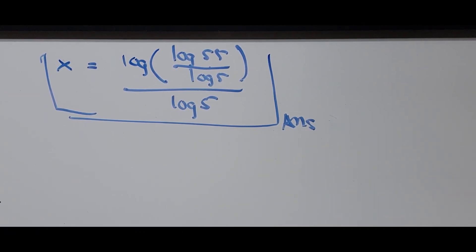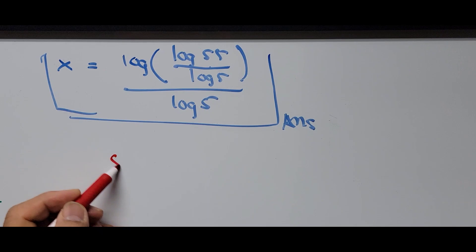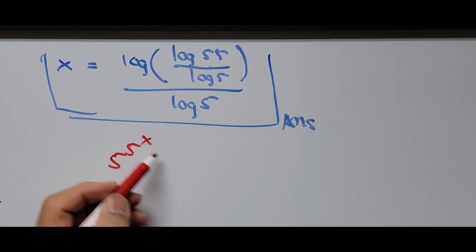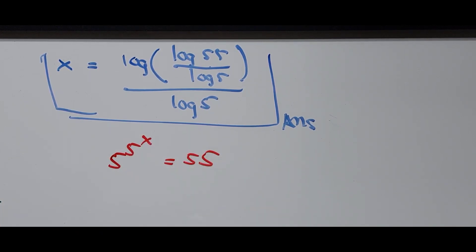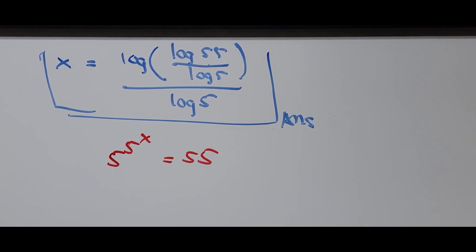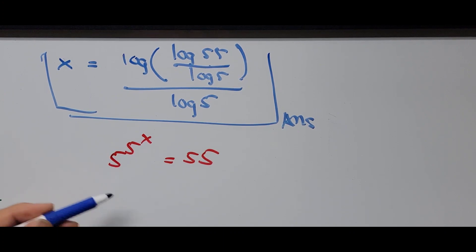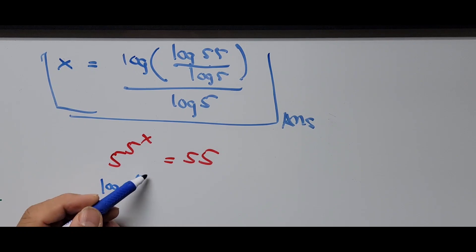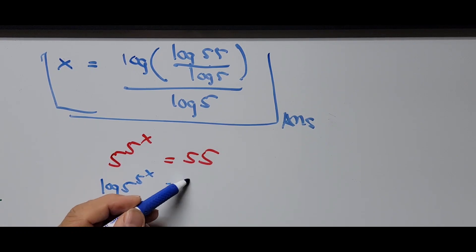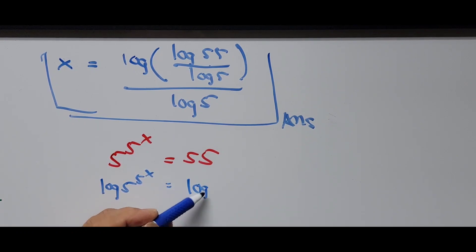Now let's do the second way to solve 5 to the power of 5^x equals 55. What we're going to do is take the log of both sides of the equation right away, without any substitution. The equation becomes log of 5 to the power of 5^x equals log of 55.